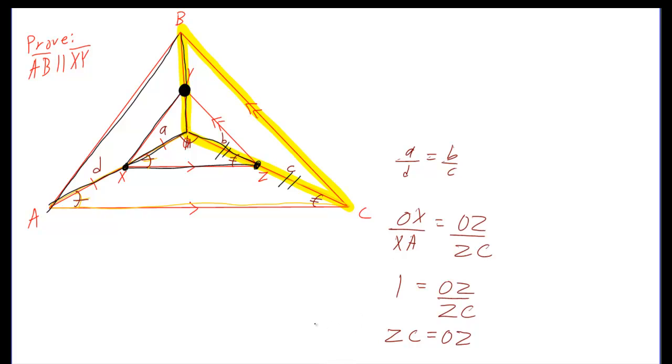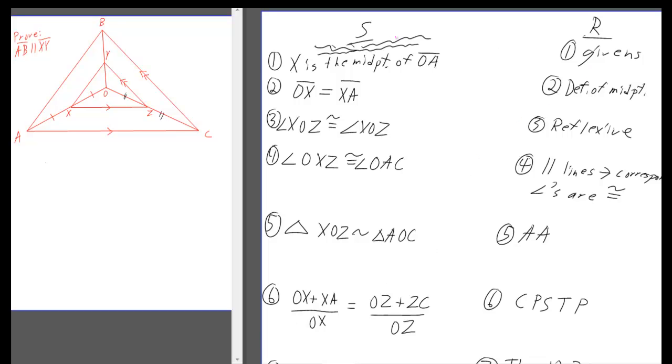So let's take a look at the full statement of reasons for that, though. You would first write out all the givens, and one of the most important givens I actually wrote out, X is the midpoint of OA. That was that right there. Anyway, then you would say OX is equal to XA by the definition of midpoint. Then you could say that angle XOZ was congruent to angle XOZ, that would have been reflexive. And then angle XOZ is equal to angle OAC. That was this congruent to that.